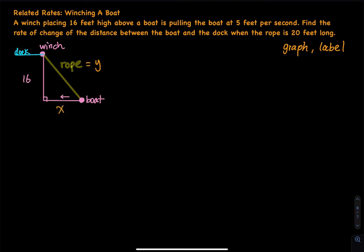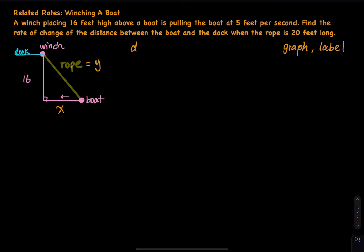What else do we know? We have the height of 16. And the boat is being pulled at 5 feet per second. So the derivative of x with respect to time, dx/dt, is 5 feet per second.